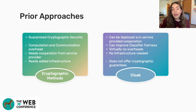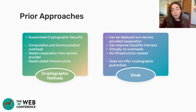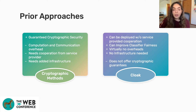Cloak does not have huge overheads — it has very negligible overhead which allows it to keep the execution time in the order of milliseconds. Also, cryptographic methods need cooperation from the ML service providers to build the infrastructure needed to apply them, whereas Cloak can be deployed by the users themselves without requiring the service provider to cooperate, making it easier to use and deploy.